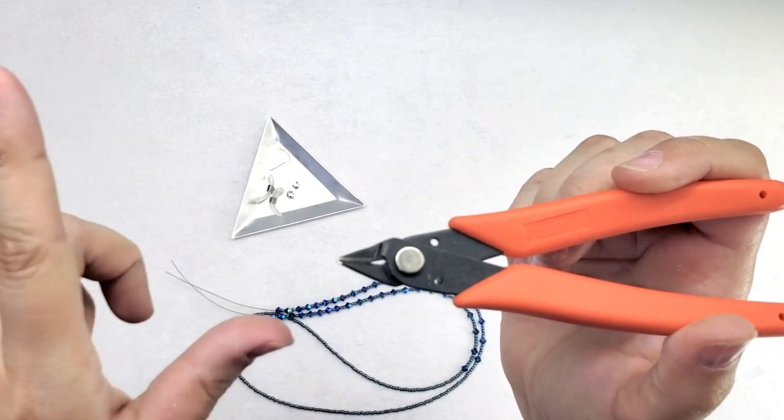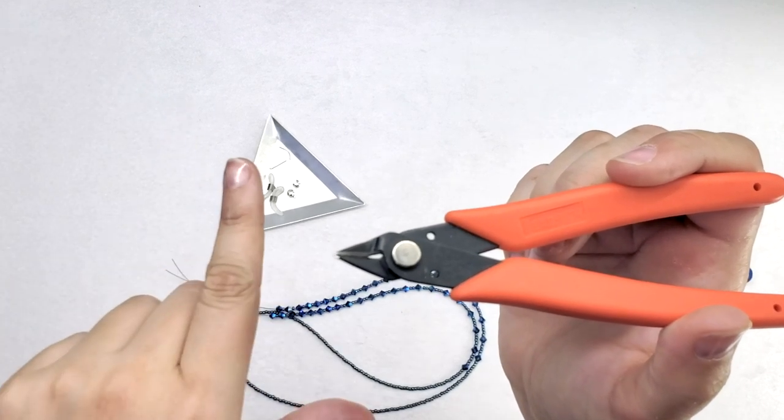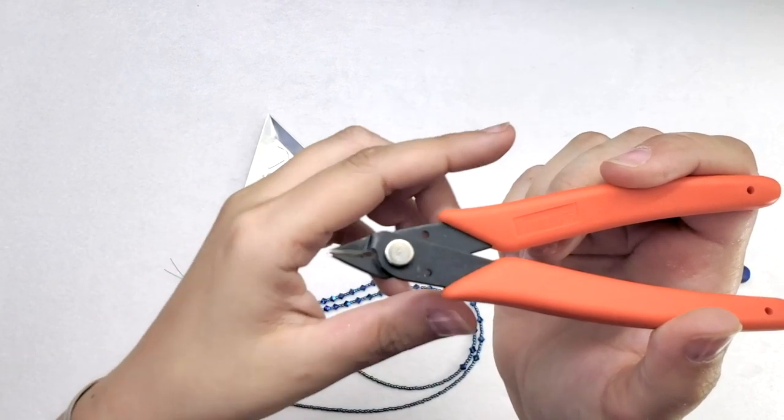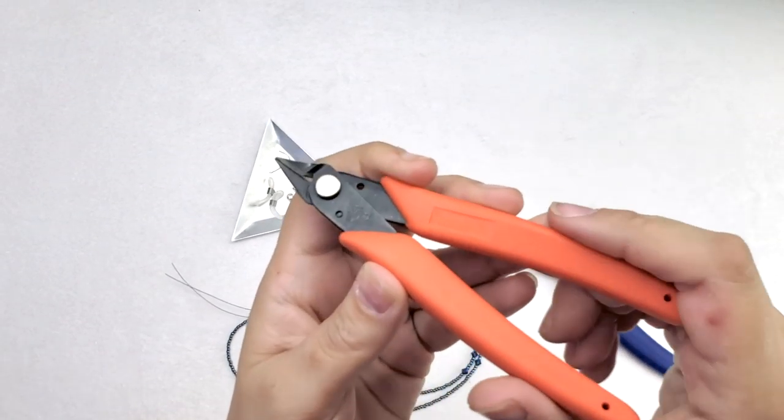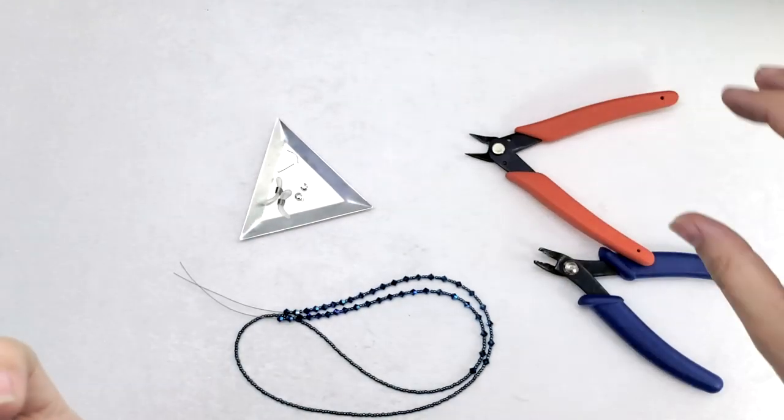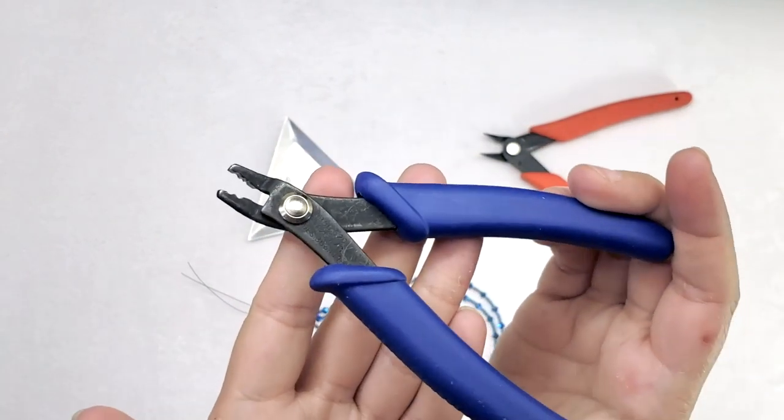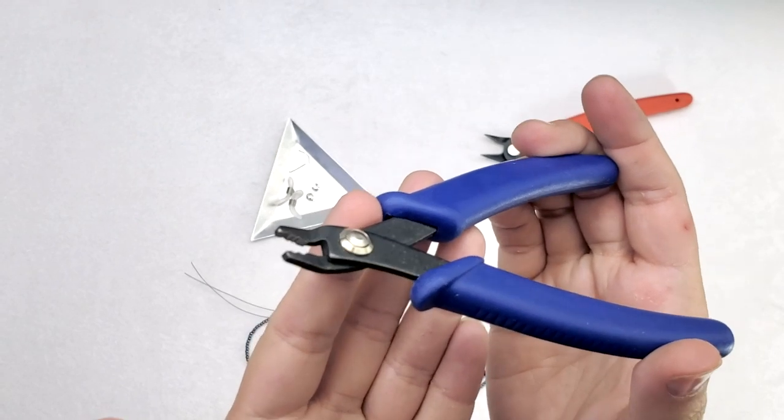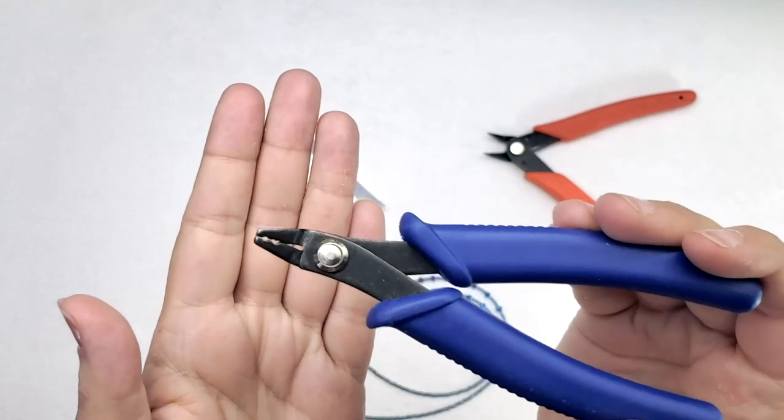You also want to make sure that you don't use your regular wire cutters to cut your Soft Flex because you will dull your regular wire cutters. You want to keep those nice and sharp for when you're cutting things like head pins, which they're meant for, and keep your flexible beading wire for your flex cutter here. And of course we have our crimper tool. This is a standard crimper tool because we're using a pretty standard two millimeter tube crimp.